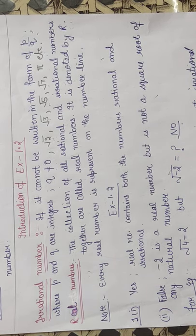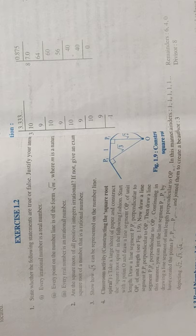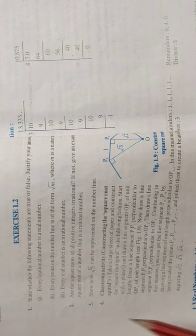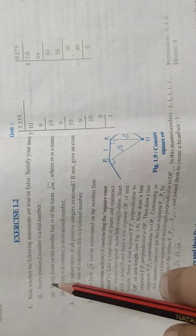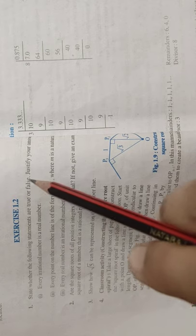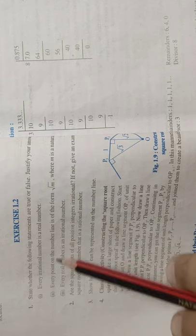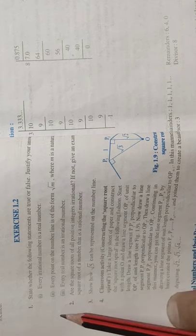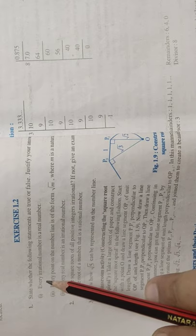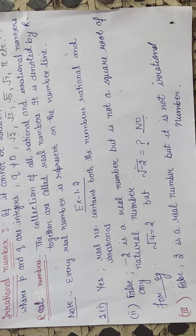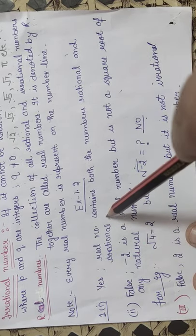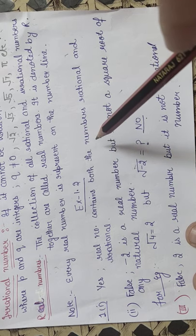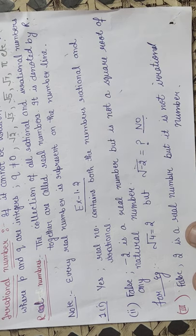First we start with Exercise 1.2: state whether the following statements are true or false and justify your answer. The first part is: every irrational number is a real number. As we know, real numbers contain all kinds of numbers including irrational numbers, so this statement is true. Yes, real numbers contain both rational and irrational numbers, so every irrational number is a real number.